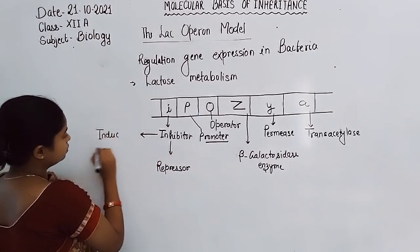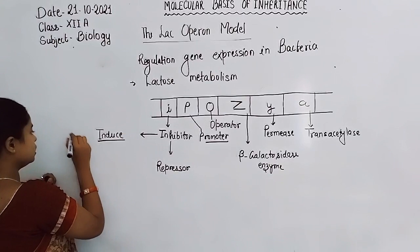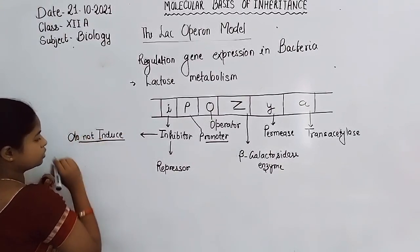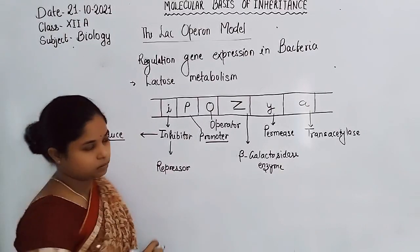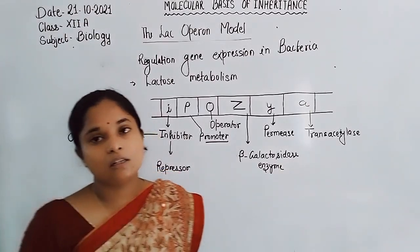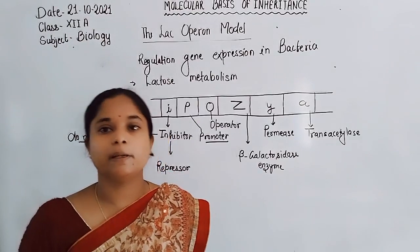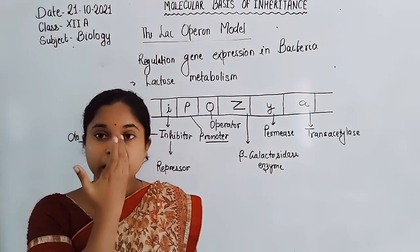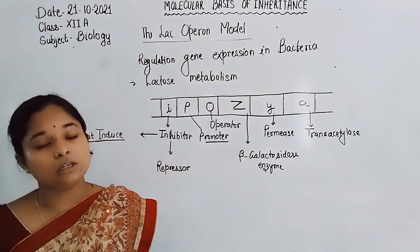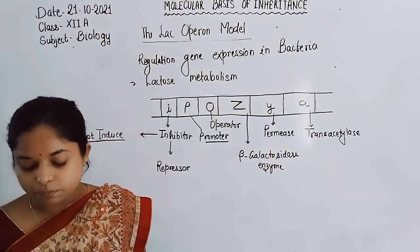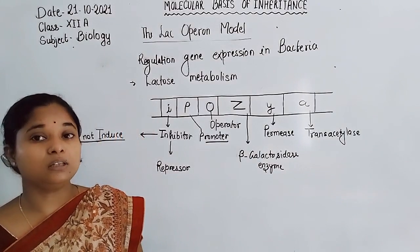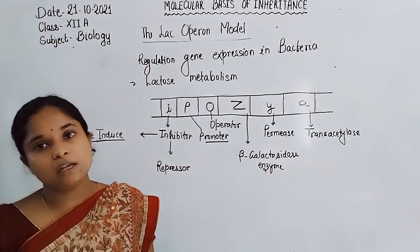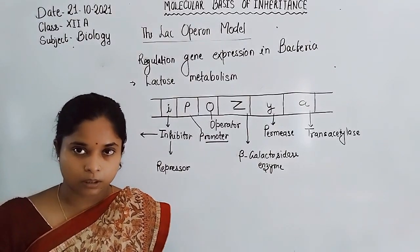These are the genes responsible for the lactose metabolism in bacteria. So, when lactose is present in the culturing medium, the expression of gene takes place in bacteria as explained by Jacob and Monod.